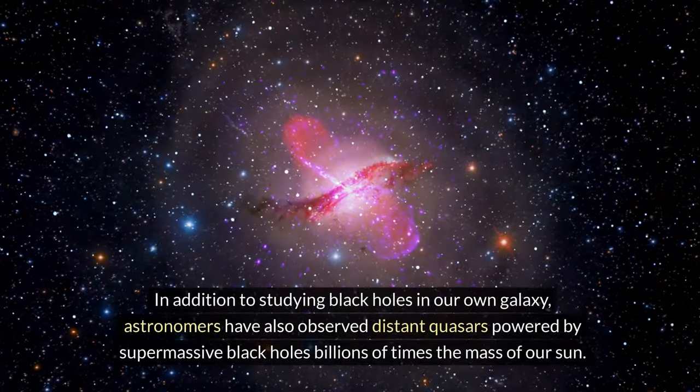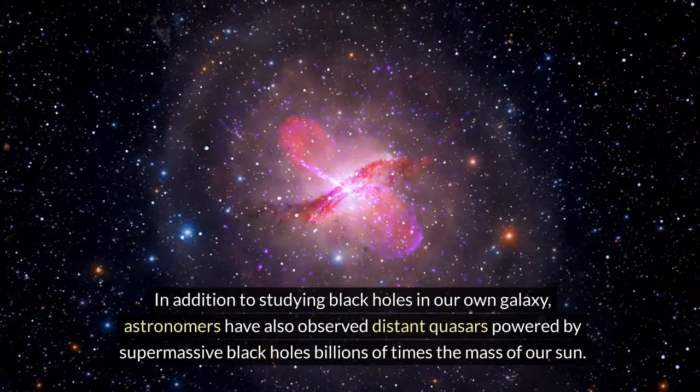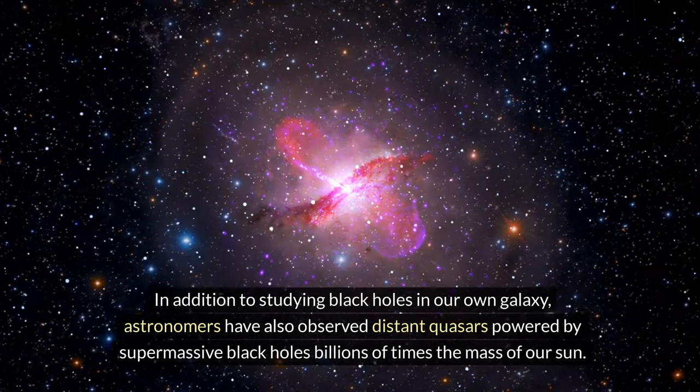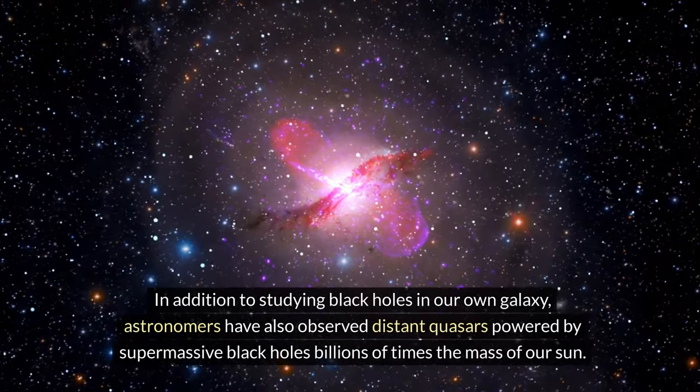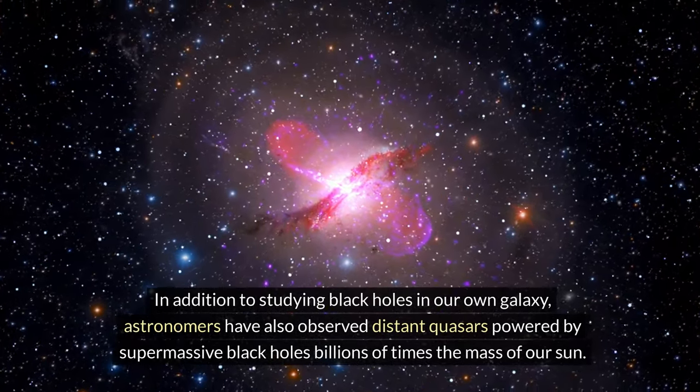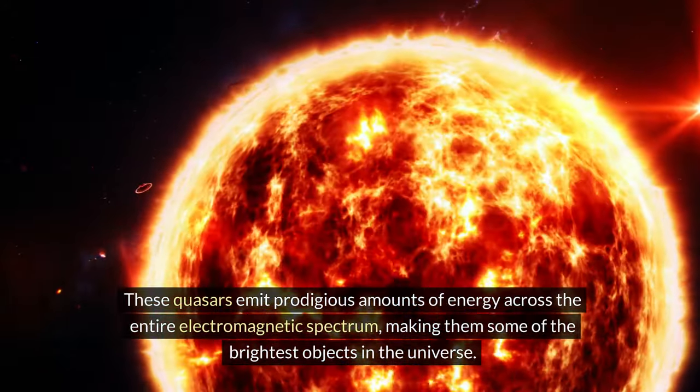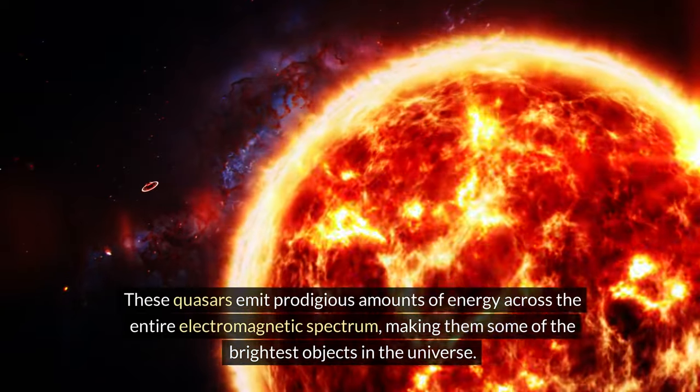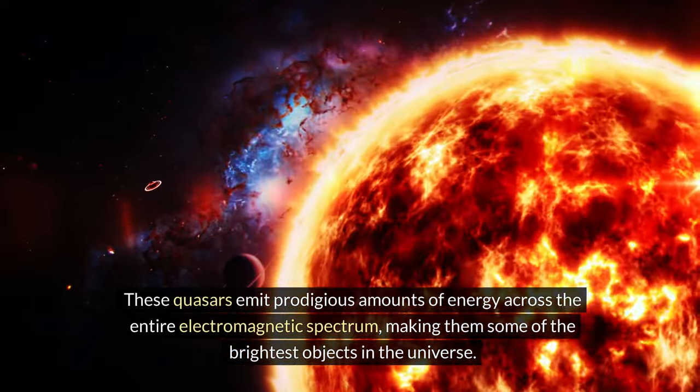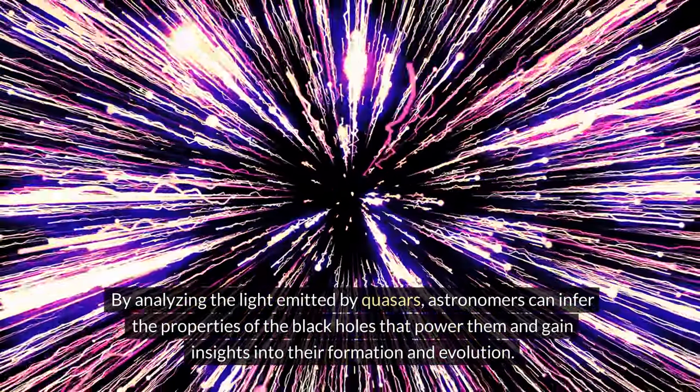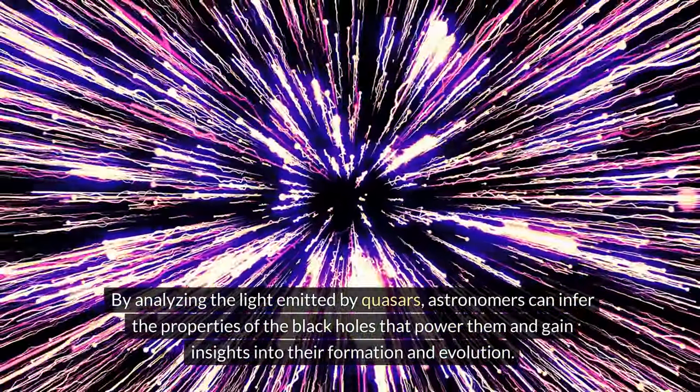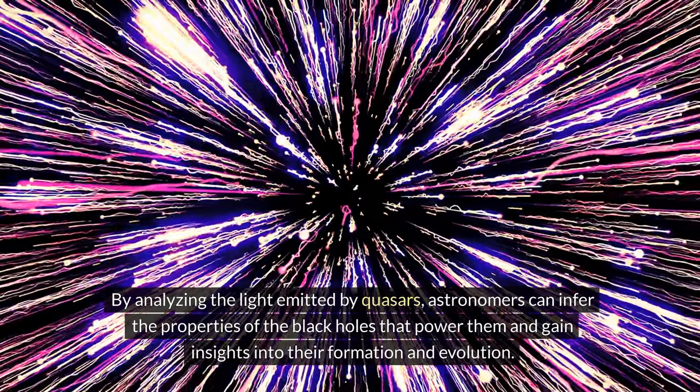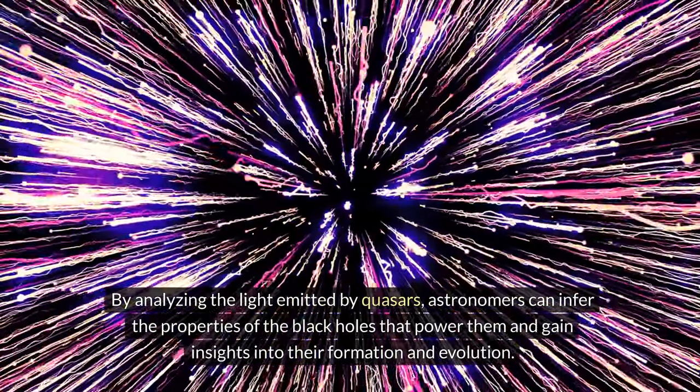In addition to studying black holes in our own galaxy, astronomers have also observed distant quasars powered by supermassive black holes billions of times the mass of our Sun. These quasars emit prodigious amounts of energy across the entire electromagnetic spectrum, making them some of the brightest objects in the universe. By analyzing the light emitted by quasars, astronomers can infer the properties of the black holes that power them and gain insights into their formation and evolution.